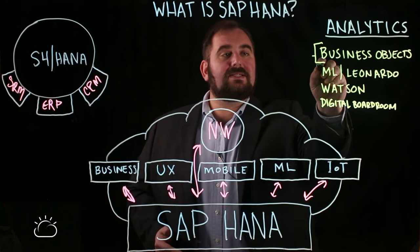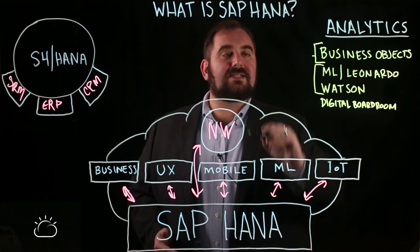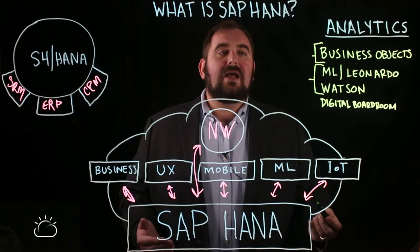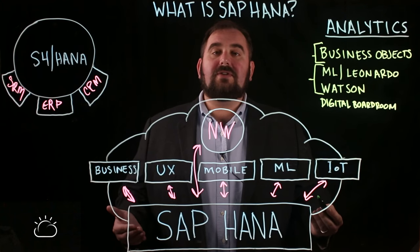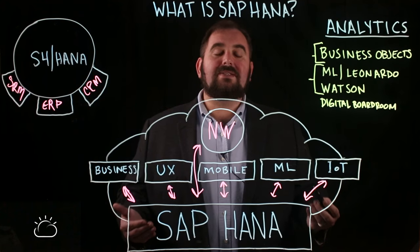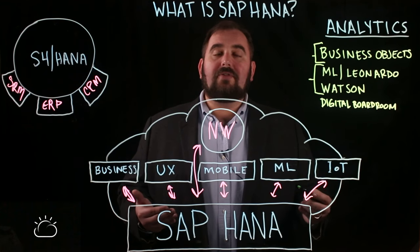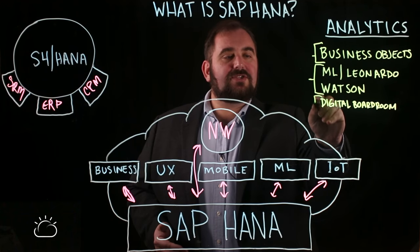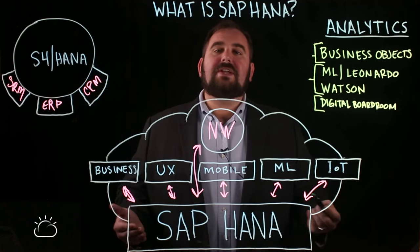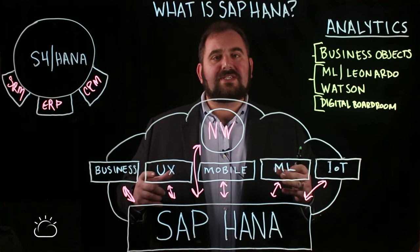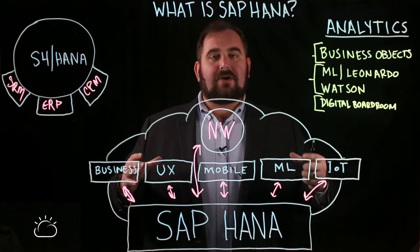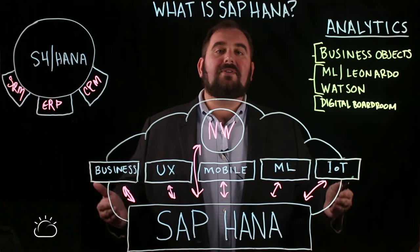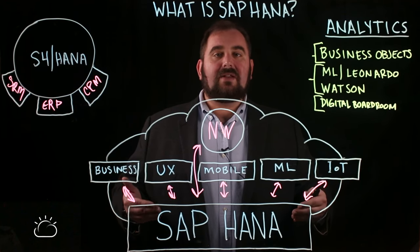The second piece is what I consider the enterprise level. That's going to be your machine learning — your Leonardo, your Watson. That's where you're using artificial intelligence to actually gain important insight into your data that otherwise you might never know about. And then the third piece is what I think of as the strategic level. That's going to be your digital boardroom — your C-suite and board of directors who want a top-down enterprise-level view of what's going on in your system and your factories, but at a strategic level.